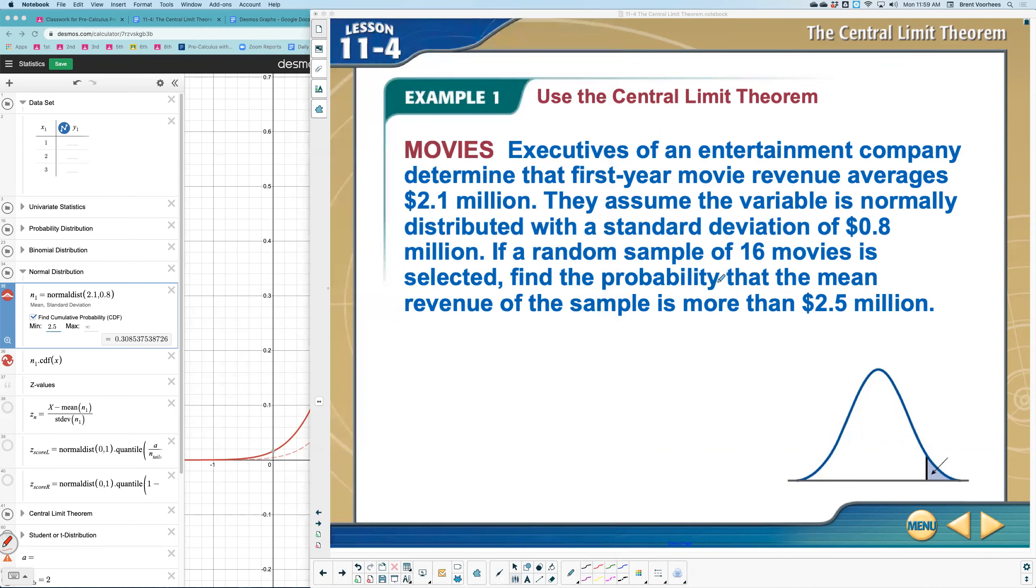We're looking at a few different things in this problem. First, we are going to say the mean is $2.1 million in money. The original standard deviation was, just like we said, $0.8 million. But here's where things get different. We're going to say we have 16 samples, and of that samples, we want to say the sample mean, that's this symbol here, is $2.5 million.